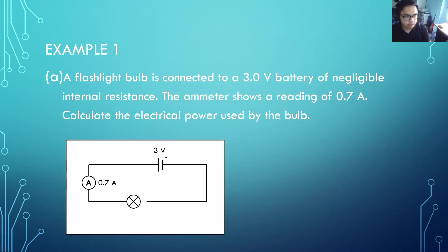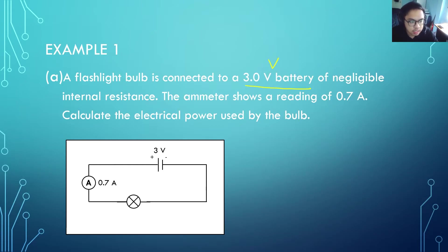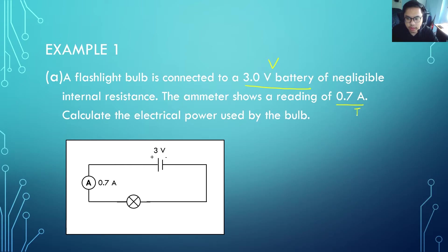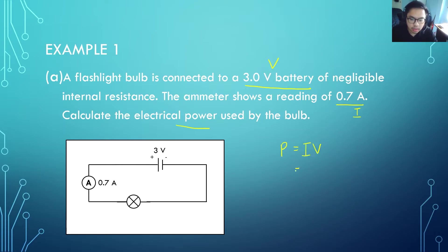Example 1a: A flashlight bulb is connected to a 3-volt battery of negligible internal resistance. The ammeter shows a reading of 0.7 amps. Calculate the electrical power used by the bulb. We're given current and voltage, so we use P equals IV. With I equals 0.7 and V equals 3, the answer is 2.1 watts.